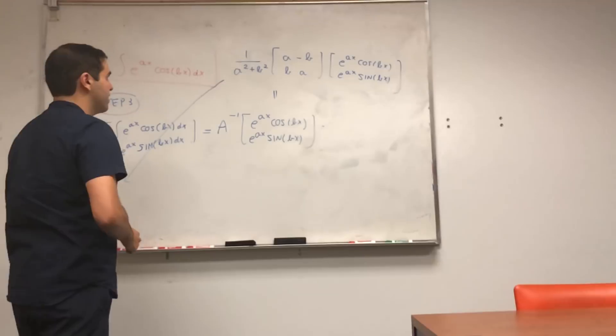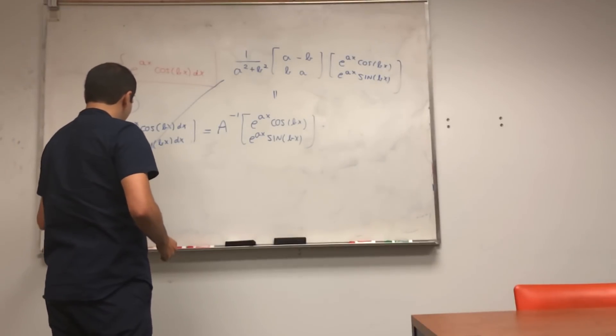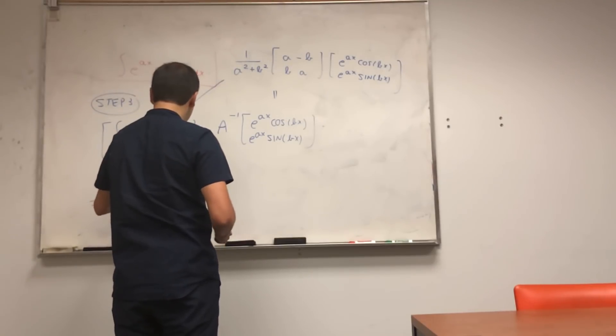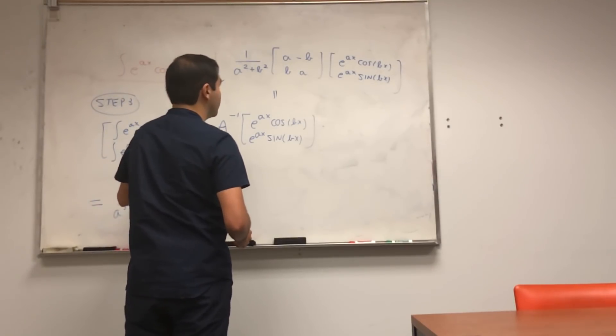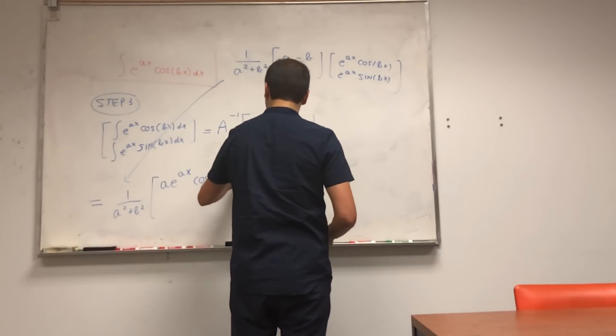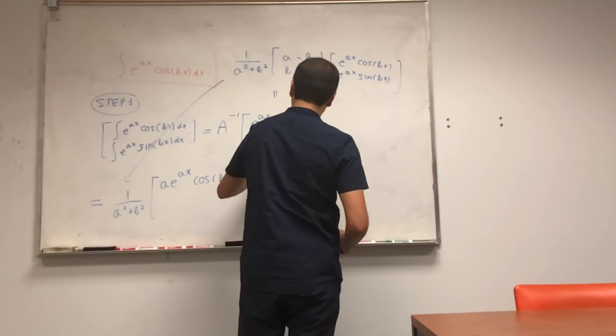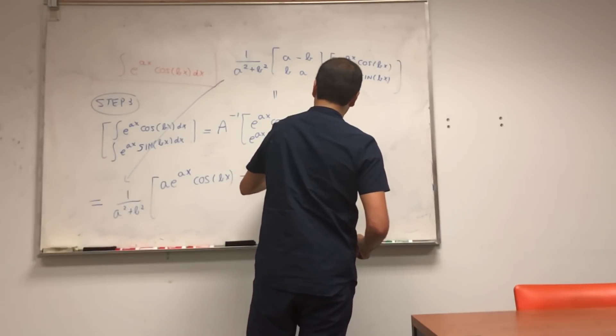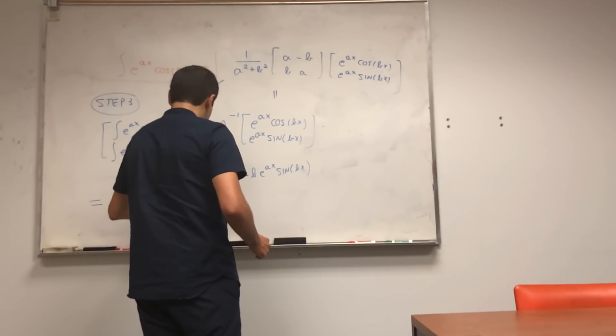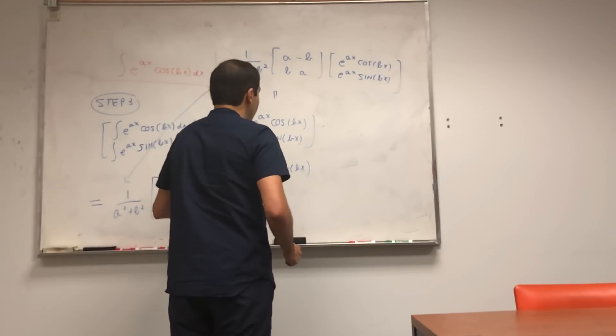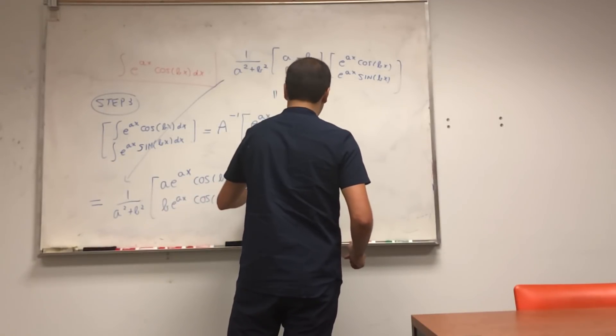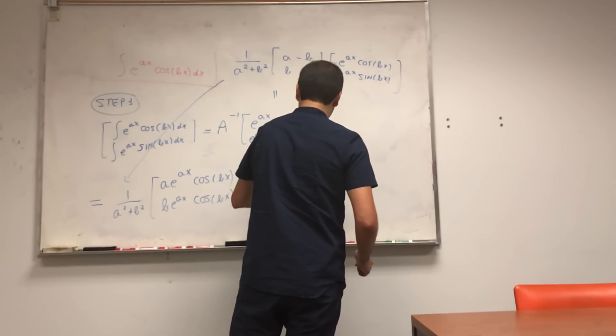So going back here, we get 1 over a squared plus b squared, and so a e to the ax cosine of bx minus b e to the ax sine of bx, b e to the ax cosine of bx plus a e to the ax sine of bx.